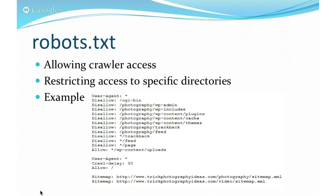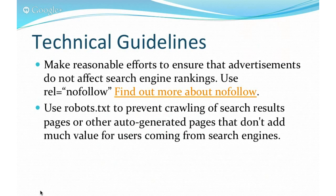More technical guidelines: many plugins that generate affiliate links allow you to turn on nofollow — it is a good idea to use nofollow or Google may lower your rankings. Google's guidelines state: make reasonable efforts to ensure that advertisements do not affect search engine rankings. Use the nofollow tag. Also use your robots.txt to prevent crawling of search results pages or other auto-generated pages that don't add much value for users coming from search engines.